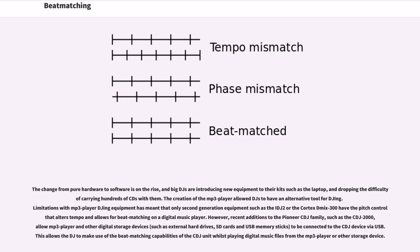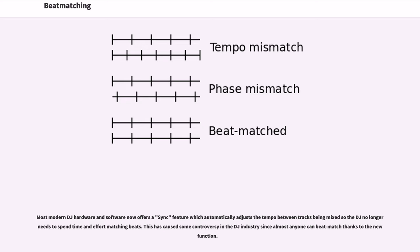This allows the DJ to make use of the beatmatching capabilities of the CDJ unit whilst playing digital music files from the MP3 player or other storage device. Most modern DJ hardware and software now offers a sync feature which automatically adjusts the tempo between tracks being mixed, so the DJ no longer needs to spend time and effort matching beats. This has caused some controversy in the DJ industry, since almost anyone can beatmatch thanks to the new function.